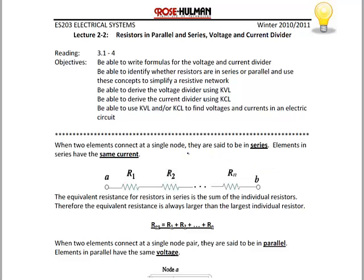When two elements connect to a single node pair, they are said to be in series. A common mistake students make is assuming that any number of elements that meet are in series. No — only when exactly two elements meet at the node, such as here, are R1 and R2 in series, only because there are only two.